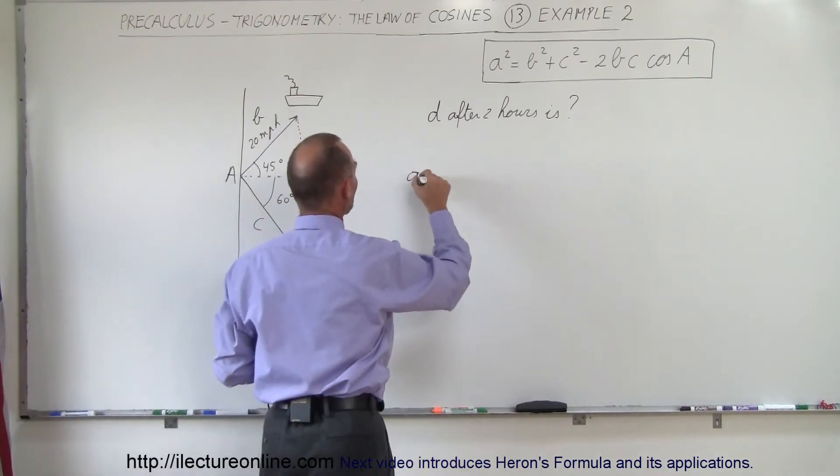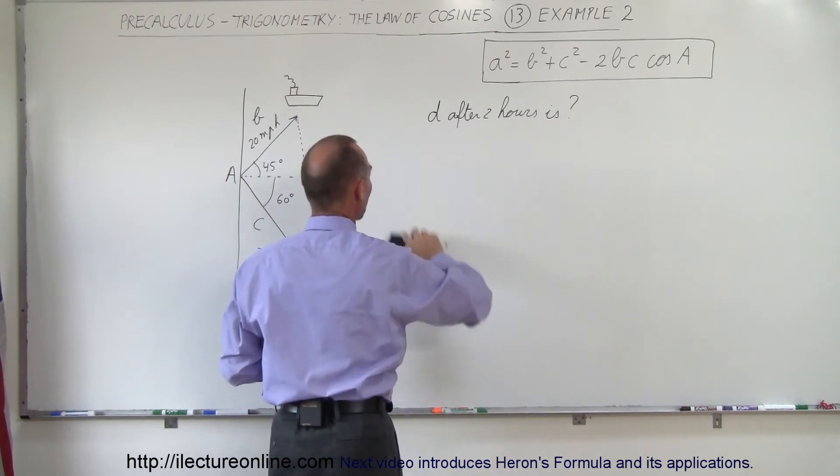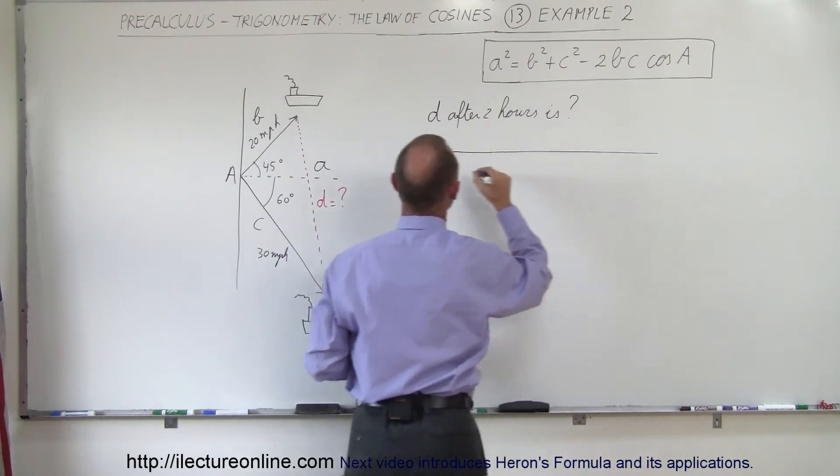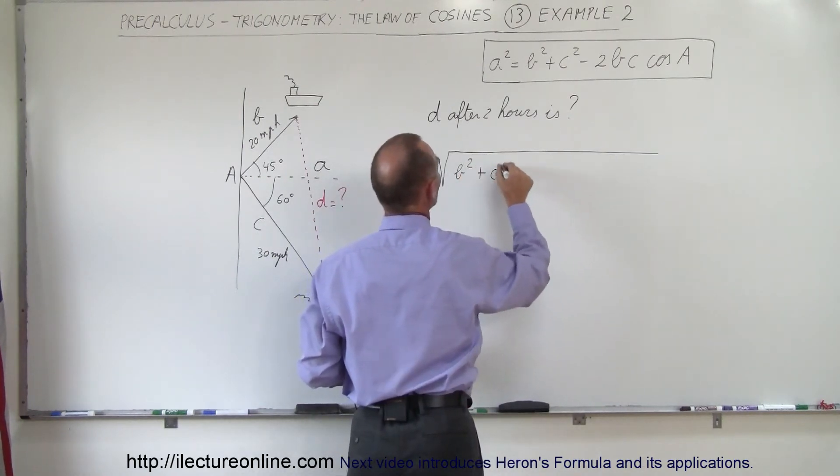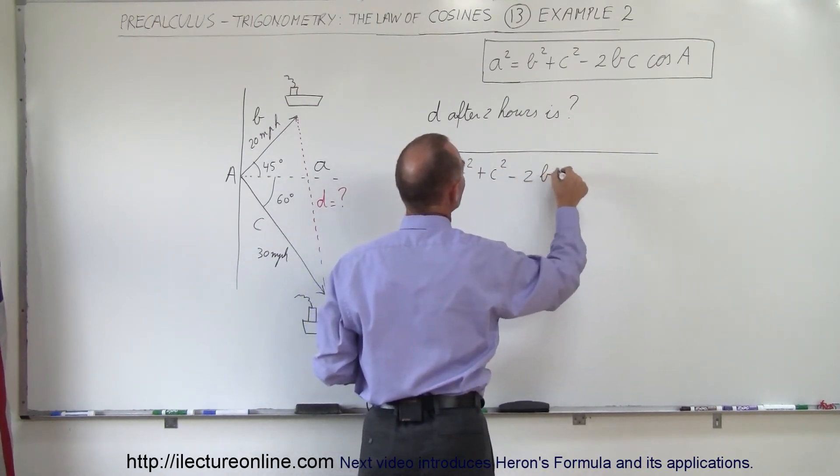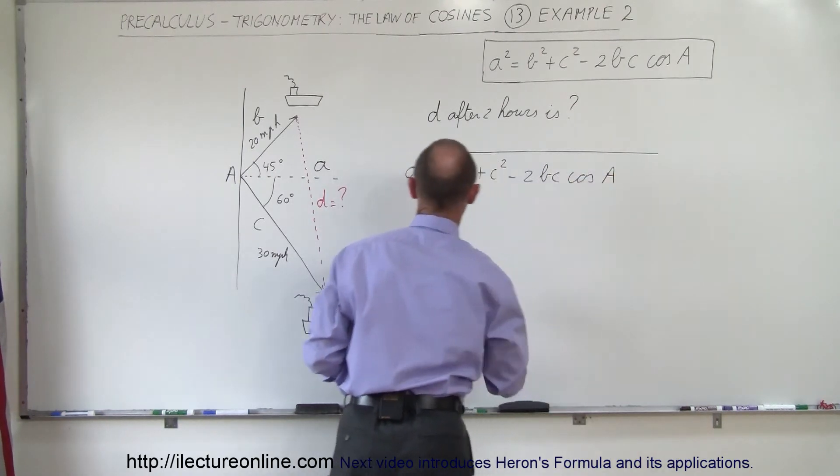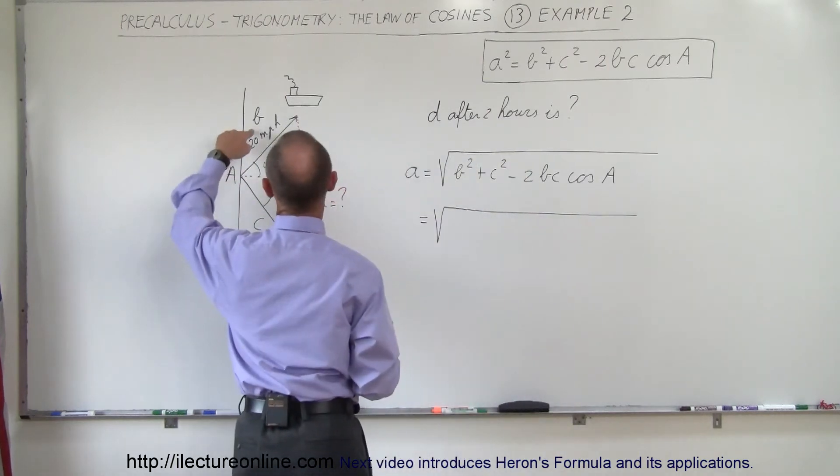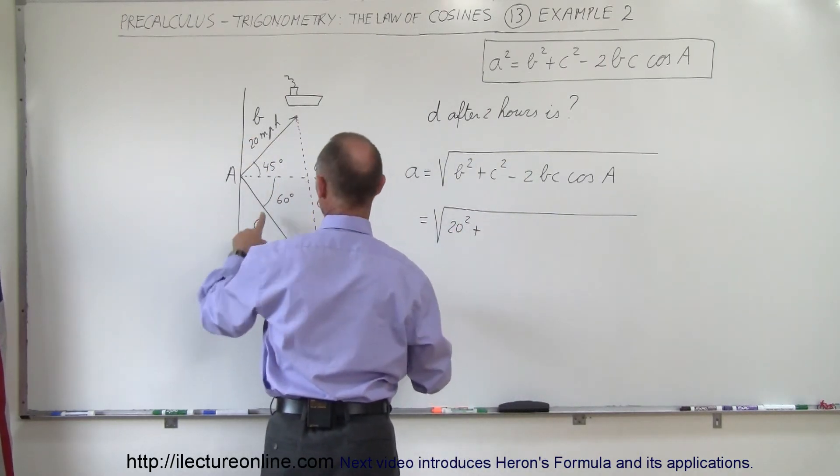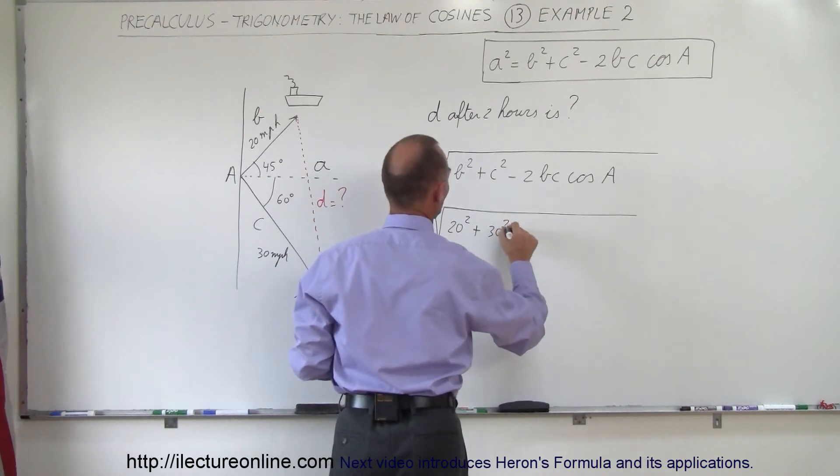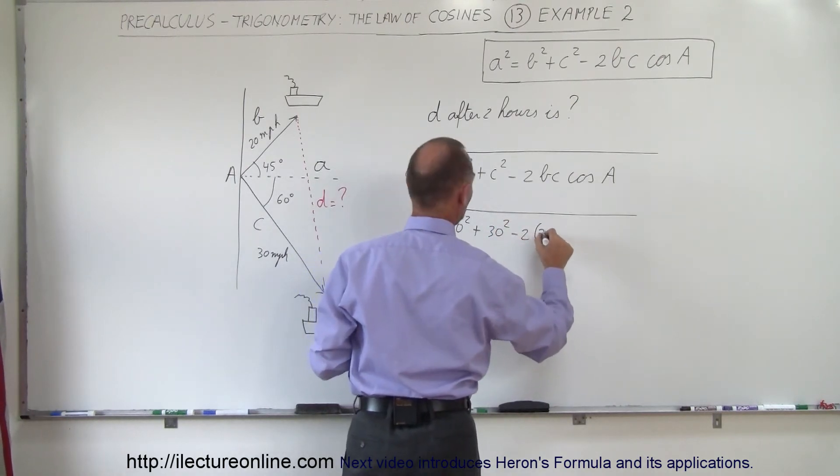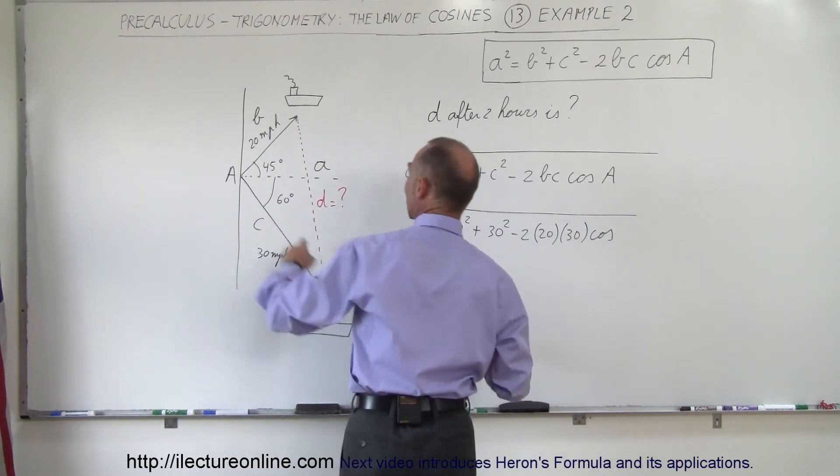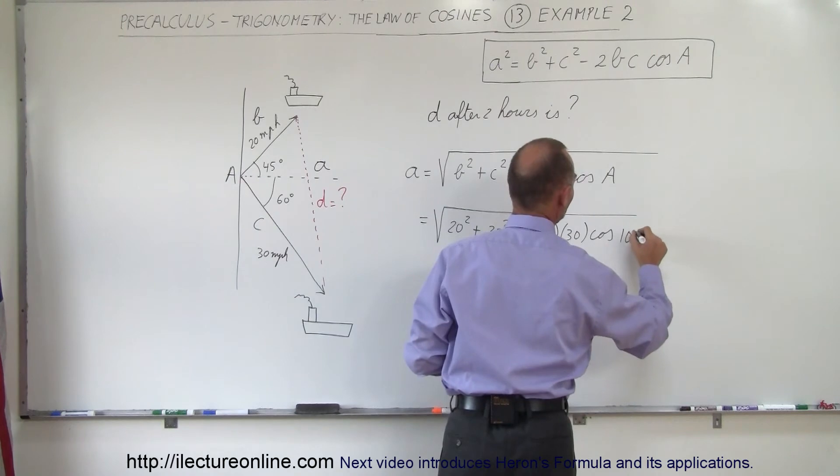All right, so we end up with a squared, or better yet, let's just right away go to a. a is equal to the square root of b squared plus c squared minus 2bc times the cosine of angle a. Plug in the numbers, let's see what we get. So b is going to be 20 squared plus c is 30 squared minus 2 times b which is 20, c is 30 times the cosine of angle a and we add the two together that would be 105 degrees.